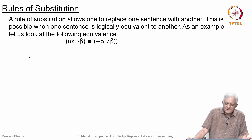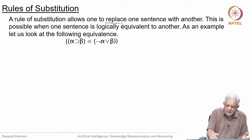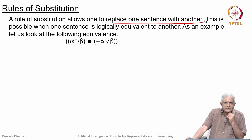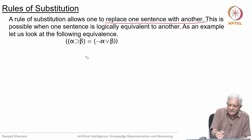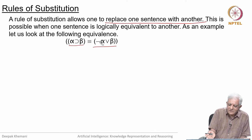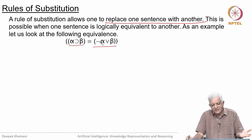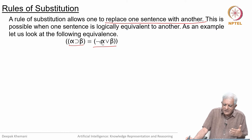There are also rules of substitution. A rule of substitution allows one to replace one sentence with another. A rule of inference says that if you are given alpha and beta, then you can add delta. A rule of substitution says that if you see a certain formula, you can replace it by another formula because they are logically equivalent. In this example, if you see alpha-implies-beta somewhere, you can replace it by not-alpha-or-beta, or vice versa, because they are logically equivalent — whenever one is true the other is true, and whenever one is false the other is false.